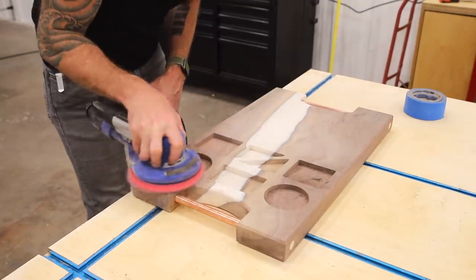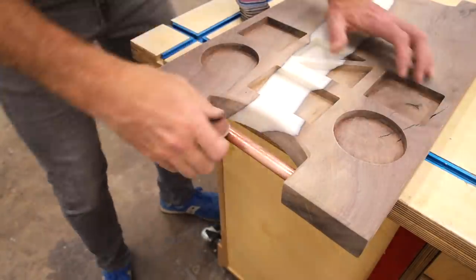I sanded the whole board up to 220 grit and used micro mesh sanding pads to shine up the copper handles.